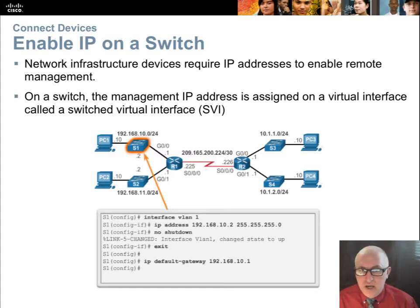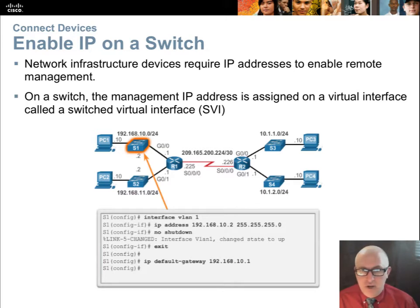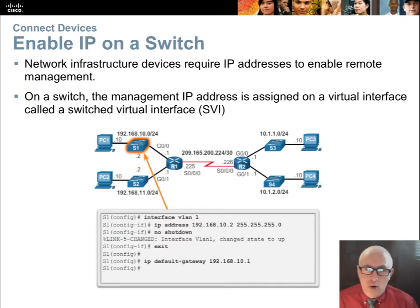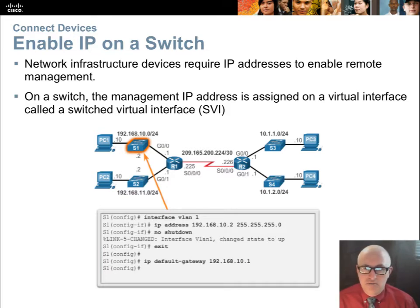The IP settings are also helpful so you can use the ping utility or traceroute utility to troubleshoot your network. For example, if you were at PC3 and couldn't reach PC1, one strategy would be to ping each device between them. You might ping switch one at 192.168.10.2 — if successful, it isolates the problem to PC1 or the cable from PC1 to switch one, greatly reducing troubleshooting time.